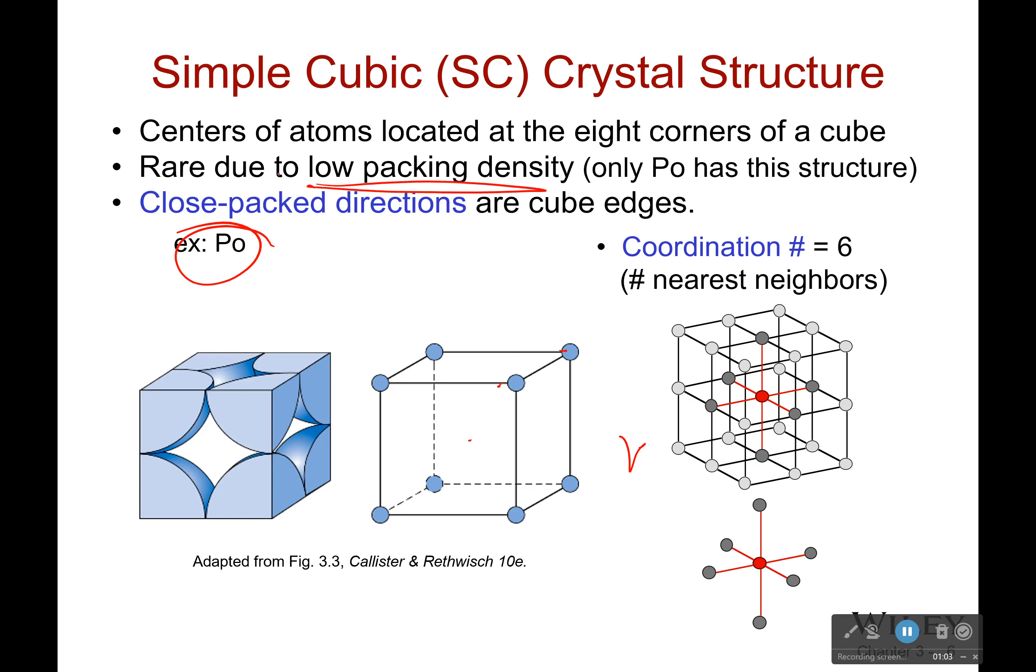Now one thing that's very important right here is the close packed directions are the cube edges. Now you're like, okay, why is that important? What does that even mean? What it means is I'm trying to push an atom and I want it to collide with another atom as quickly as possible. I push along that direction. I either push it right here because that's going to instantly touch another atom or I push along this direction.